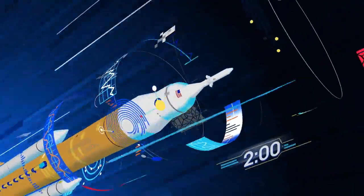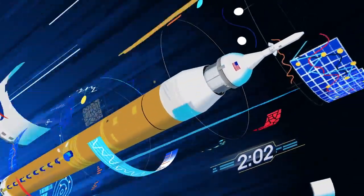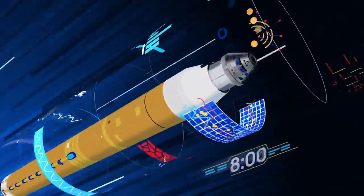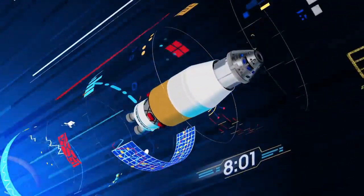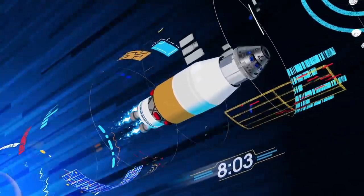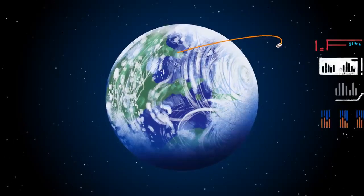Two minutes after ignition, the solid rocket boosters are spent and released. Eight minutes after launch, the core stage is depleted and separated. The upper stage fires briefly, placing Orion into a parking orbit around the Earth.